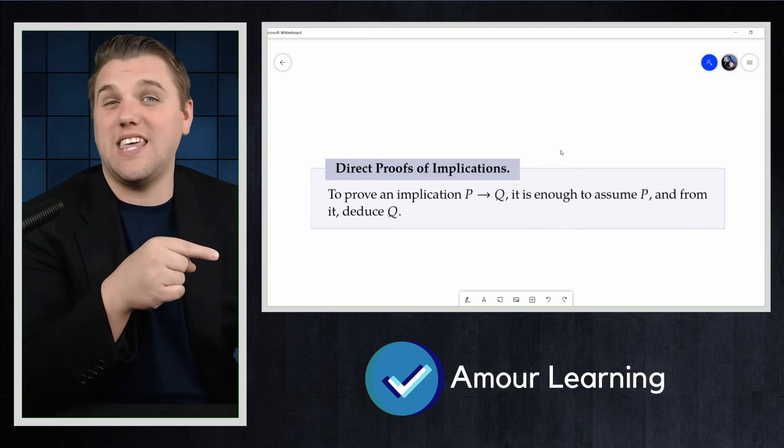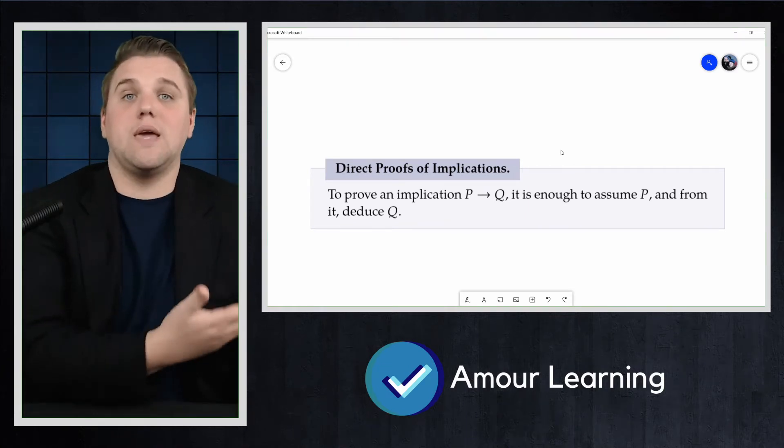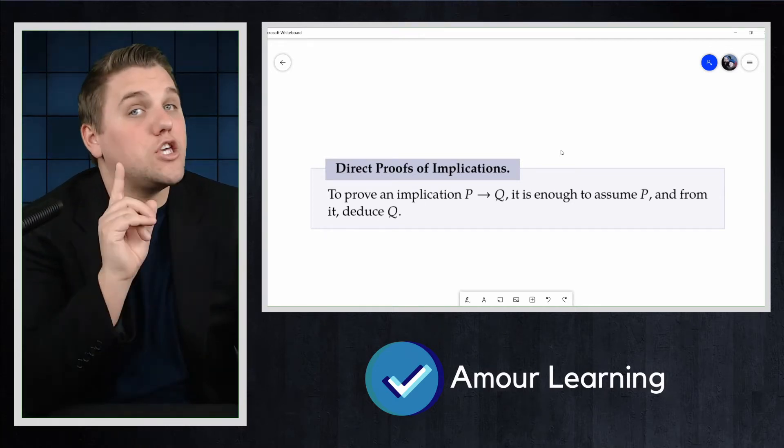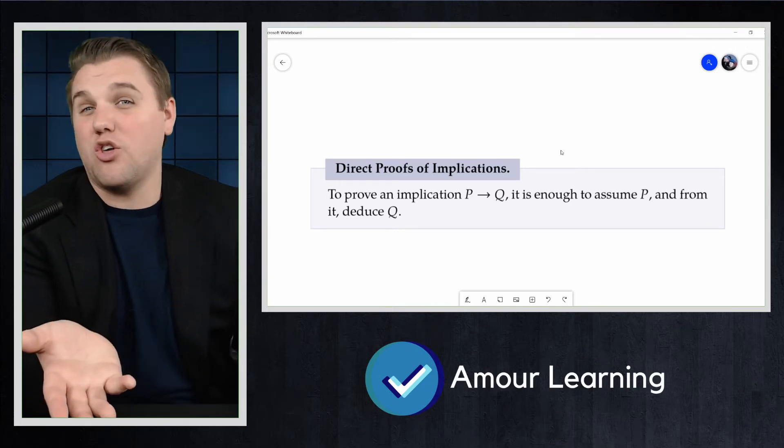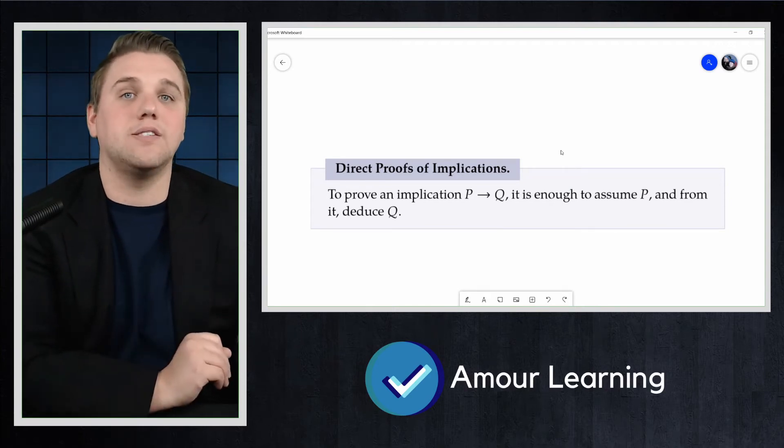Perhaps a better way to say this is that to prove a statement of the form P implies Q directly, you have to explain why Q is true, but you get to assume that P is true first. After all, you only really care about whether Q is true in the case that P is as well.